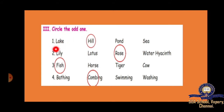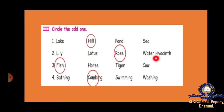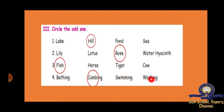Circle the odd one out. First: lake, hill, pond, sea — lake, pond, and sea are water bodies, but hill is not, so the answer is hill. Second: lily, lotus, rose, water hyacinth — lily, lotus, and water hyacinth all grow in water, but rose grows on the ground, so the answer is rose. Third: fish, horse, tiger, cow — horse, tiger, and cow live on land, but fish lives in water, so the answer is fish. Fourth: bathing, combing, swimming, washing — bathing, swimming, and washing all need water, but combing does not need water, so the answer is combing.